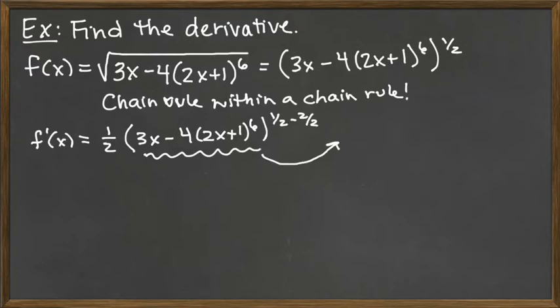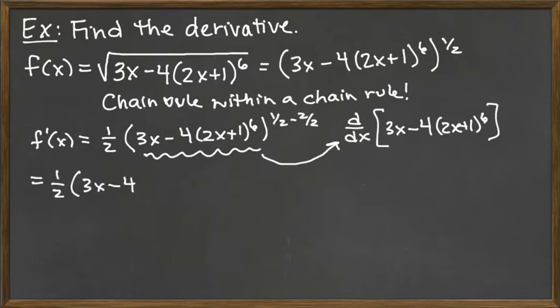When we take its derivative, itself is going to be fairly involved. We've got the derivative here of 3x minus 4 times 2x plus 1 raised to the 6th power. So we've made progress. The derivative here is 1 half times this long inside function. And then the 1 half minus 2 halves would be the power negative 1 half. And multiplied by it, we've got to take the derivative here of the 3x minus 4 times something in parentheses to the 6th power.